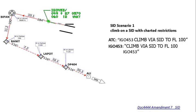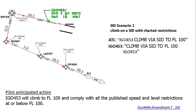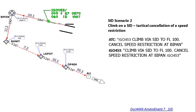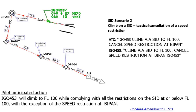Now we will discuss amendments given by COWDOG 44 amendment number seven, covering the most commonly used phraseologies. Scenario one — climb on a SID with charted restrictions: ATC says 'IFly 453, climb by SID to flight level 100.' The anticipated pilot action is to climb to flight level 100 and comply with all charted speed and level restrictions of that SID. Scenario two — climb on SID with tactical cancellation of a speed restriction: ATC says 'IFly 453, climb by SID to flight level 100, cancel speed restrictions at BIPAN,' meaning the aircraft follows all level and speed restrictions except at BIPAN.